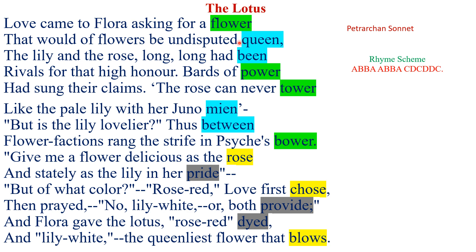The rhyming words in the first part are: flower, queen, bean, power. So flower and power rhyme together, and queen and bean rhyme together, giving us the ABBA, ABBA pattern.